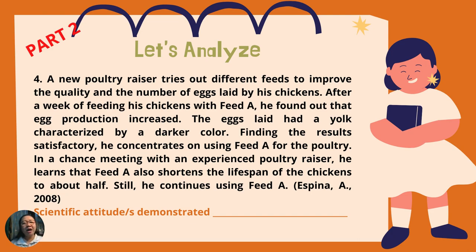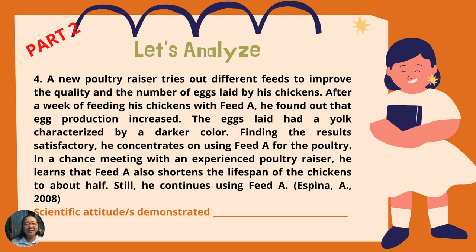Number four: a new poultry raiser tries out different feeds to improve the quality and number of eggs laid by his chickens. After a week of feeding with feed A, he found that egg production increased and the eggs had a yolk characterized by a darker color. Finding the results satisfactory, he concentrates on using feed A. In a conversation with an experienced poultry raiser, he learns that feed A also shortens the lifespan of the chickens to about half. Still, he continues using feed A. What scientific attitude is demonstrated by this scenario?